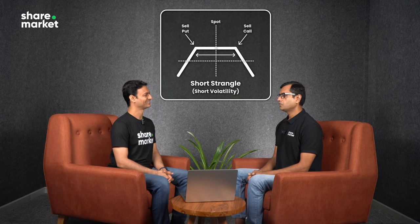Short strangle is also called short vol or short volatility strategy. Going back to class 9 and 10 math and stats, we have all read that standard deviation as a metric can never be negative, and volatility is measured through standard deviation itself.